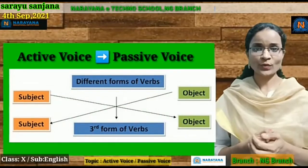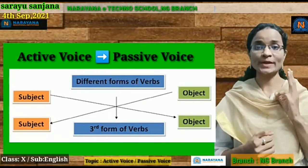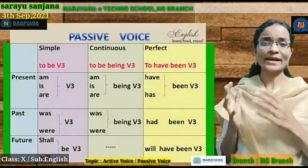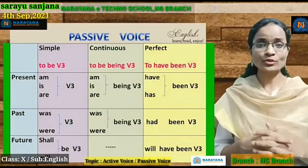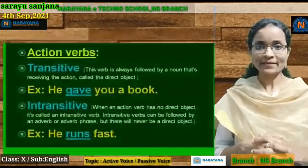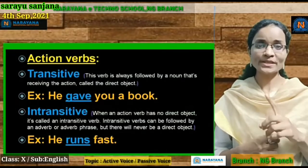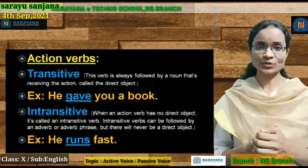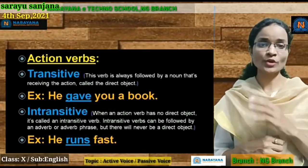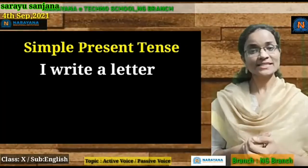Whatever the verb is in active voice, in passive voice the verb is always verb three — what we call the past participle. So to write a sentence from active voice to passive voice, we should also have knowledge about verb forms. We should also be aware of intransitive and transitive verbs, because intransitive verbs do not change from active voice to passive voice — they do not have a particular direct object, so their form cannot change.